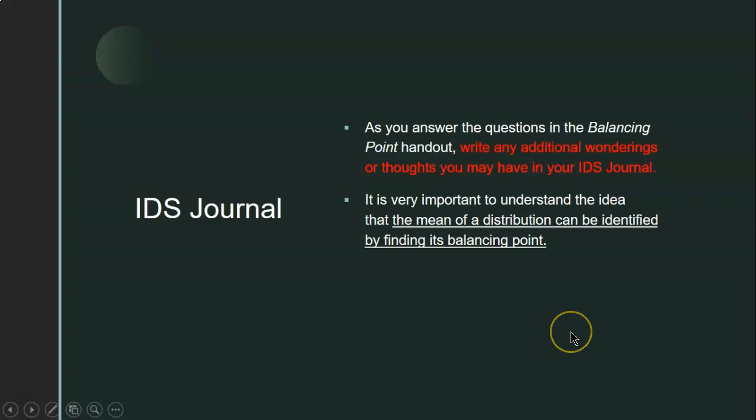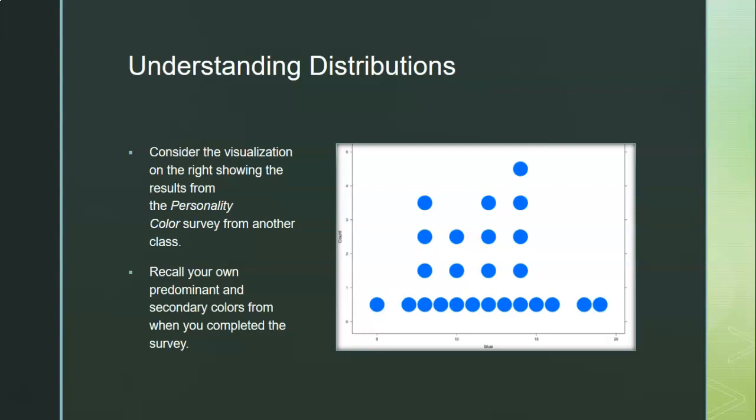Now that you have finished the 2.2A balancing point worksheet, go to your IDS journal. As you answered the questions in the balancing point handout, I'm sure you had additional wonderings and thoughts — write those down in your IDS journal. The goal of this activity was to understand that the mean of a distribution can be identified by finding the balancing point of the values.